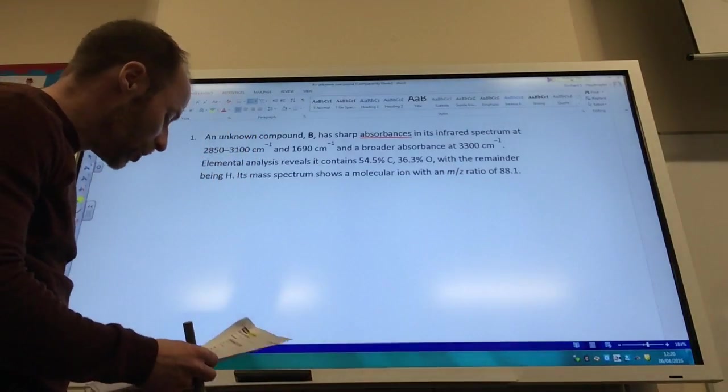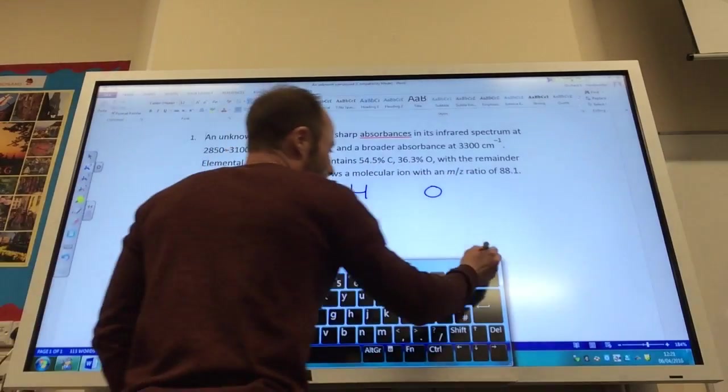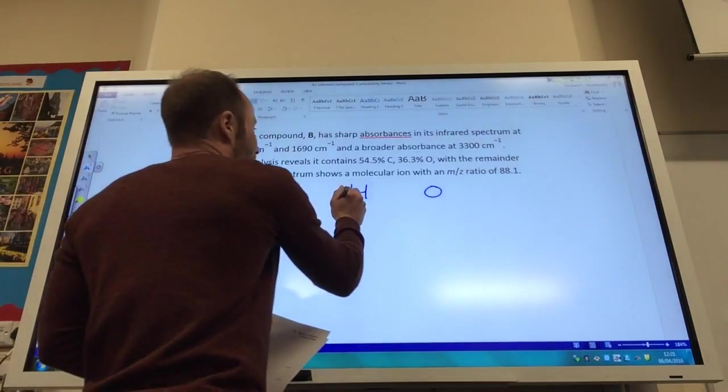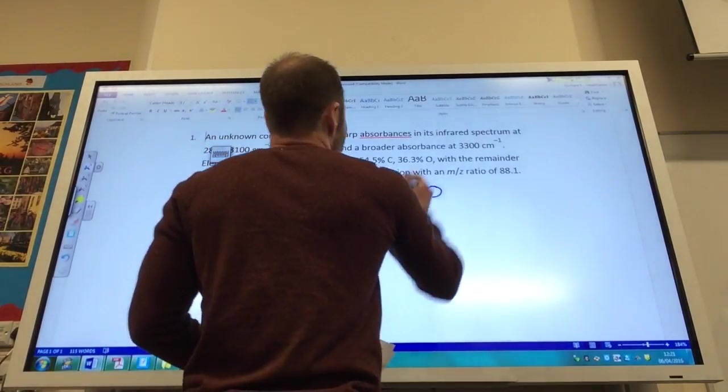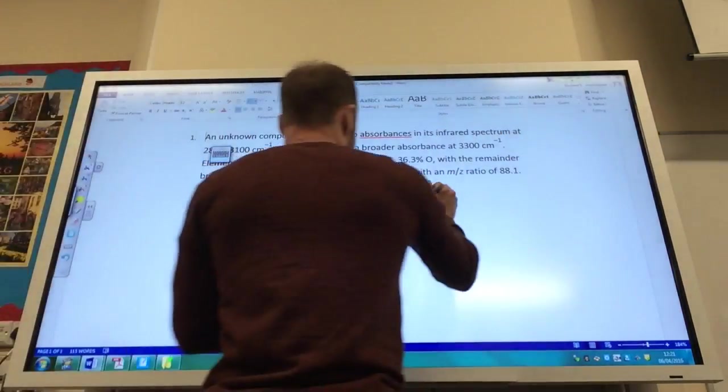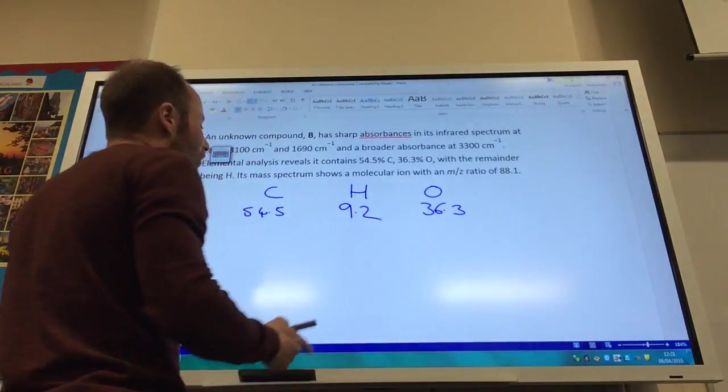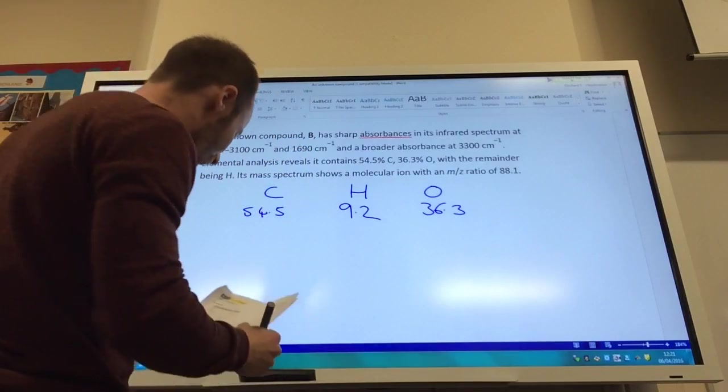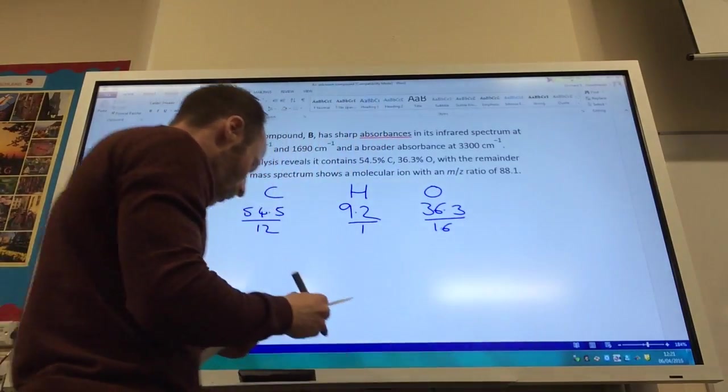We should be quite straightforward. We've got carbon, we've got hydrogen, and we've got oxygen in here. Let's have a look. So we've got 54.5% of that, 36.3% being oxygen, and then we've got 9.2 for hydrogen. The reason I know it's 9.2 is because all of these have to add up to 100 and they've given me the other two, so it's 100 minus the other two. If you divide that by 12, that by 1, and that by 16, you will get the following ratio.